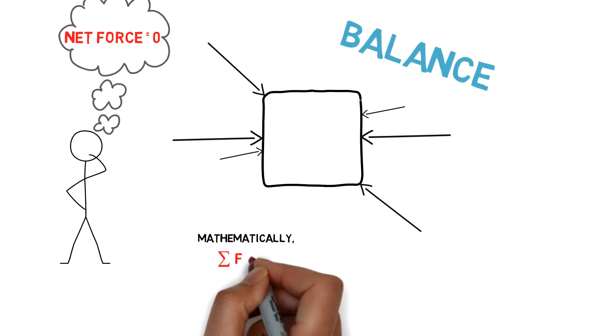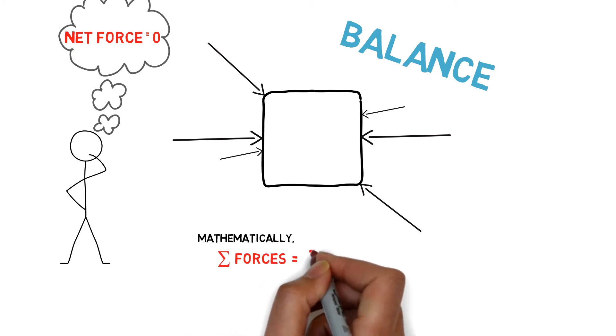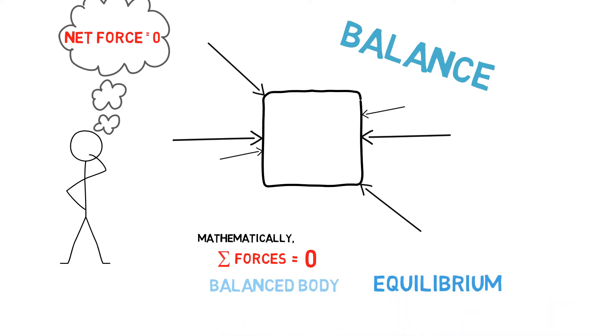Mathematically, it would simply mean that the summation of all forces will be equal to zero. As the forces on a body are all nullified by each other, the body will be in a state of balance or specifically in a state of equilibrium.